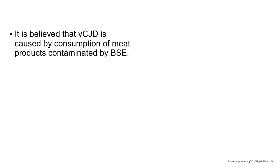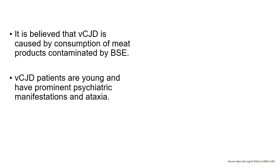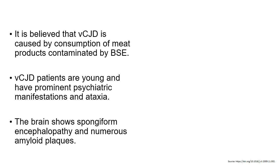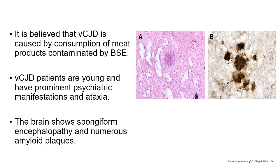Variant CJD is caused by consumption of meat products contaminated by BSE-associated prions. Variant CJD patients are usually young and present with psychiatric manifestations and ataxia. The brain shows characteristic spongiform change and numerous amyloid plaques — including the characteristic florid plaque surrounded by vacuolar degeneration in the surrounding cerebellar parenchyma, highlighted by PRP immunohistochemistry.